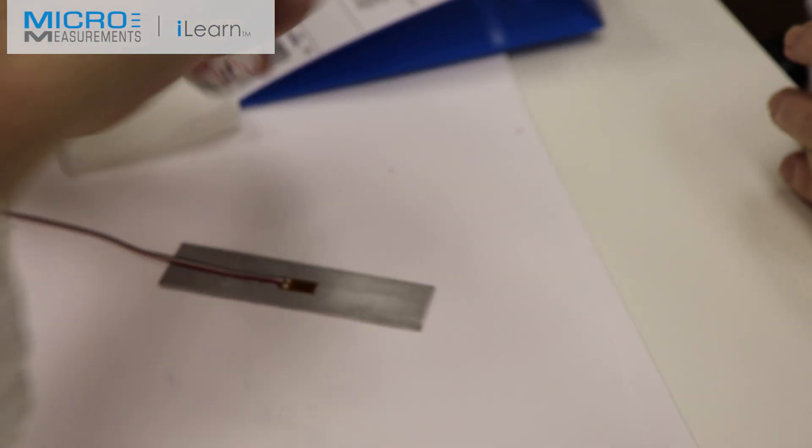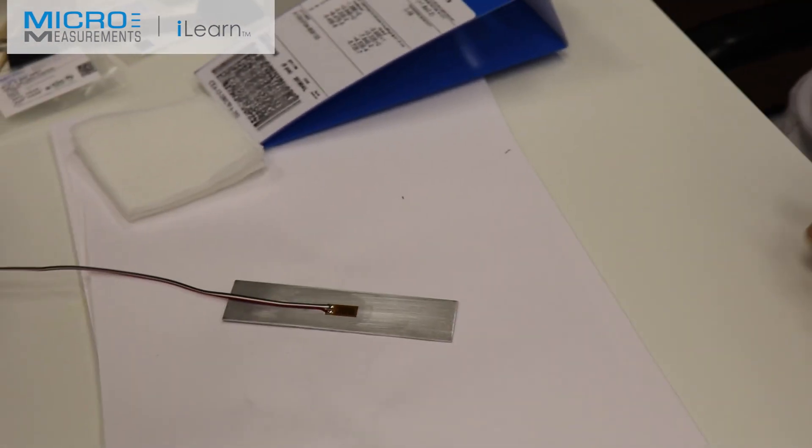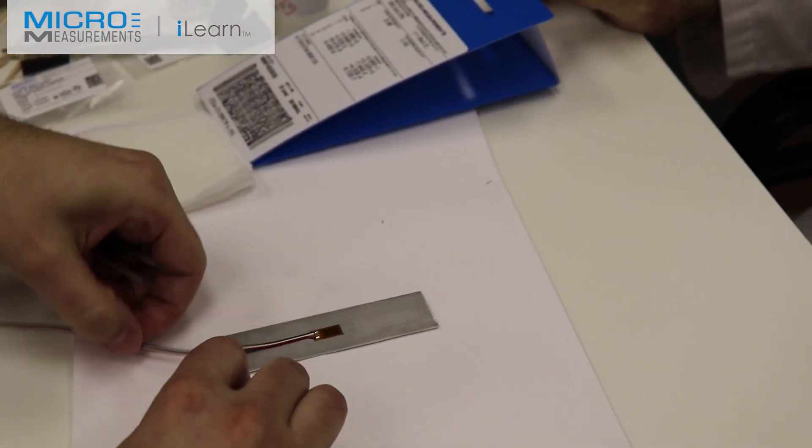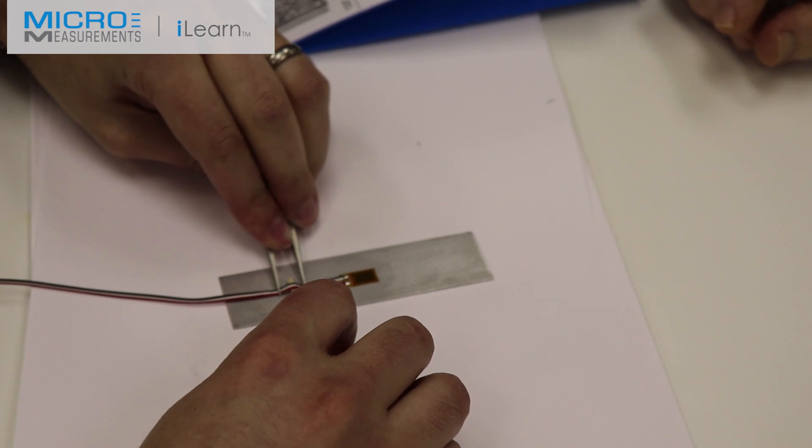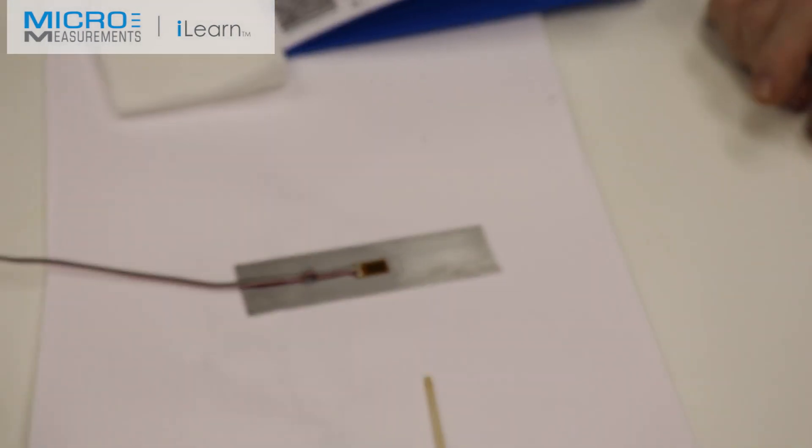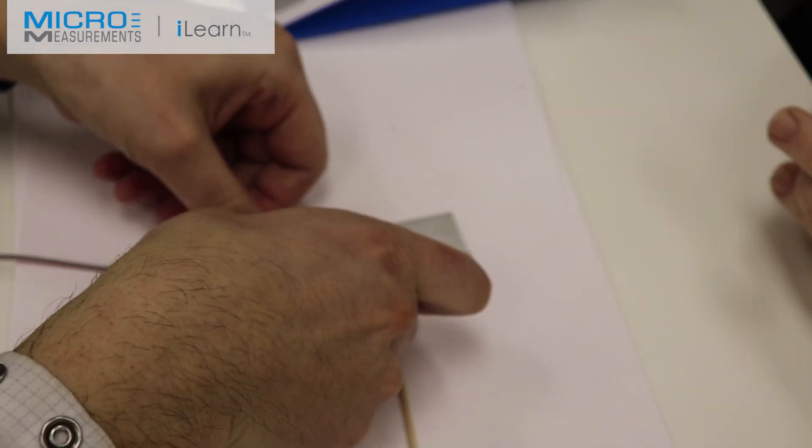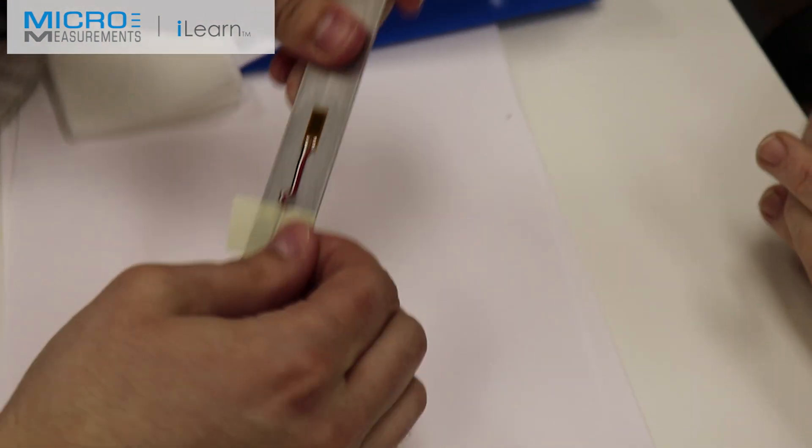He'll now introduce his strain relief loop. He'll take his pointed tweezers, place one point about half an inch away from the gauge, maybe three quarters of an inch, and then rock away from the gauge making that inchworm shape. Take a piece of the paper drafting tape, put it just behind that inchworm shape. This is also going to limit the flow of the environmental protection.